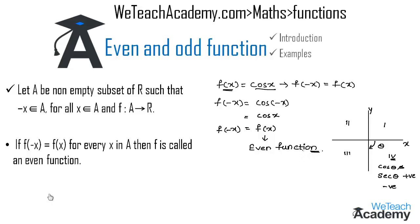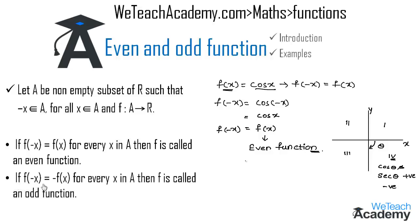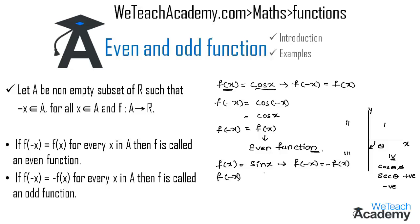Now let us learn what an odd function is. If f(−x) = −f(x) for every x in A, then f is called an odd function. Consider f(x) = sin x. For it to be an odd function, it must satisfy f(−x) = −f(x). Replacing x with −x, we get f(−x) = sin(−x).